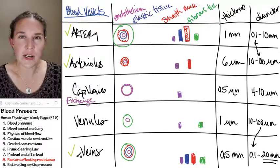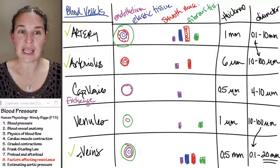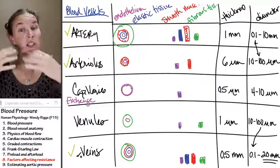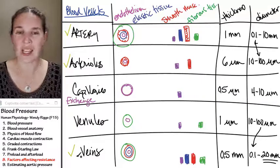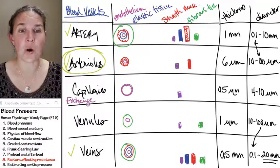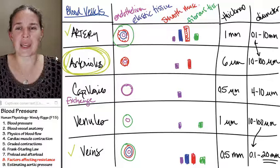Do you think arteries are going to be the primary place where vasoconstriction or vasodilation is going to have an effect on blood pressure? No, it's actually the arterioles. This is where the majority of adjustment can take place. Arteries and veins are too big.